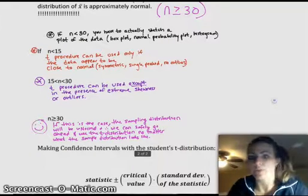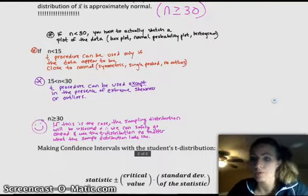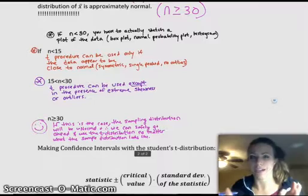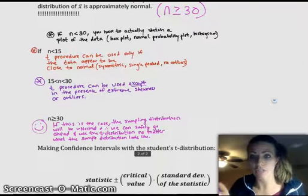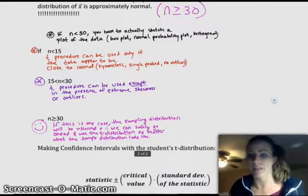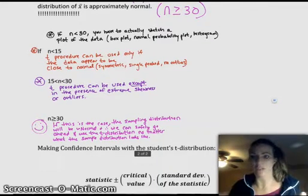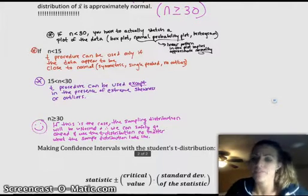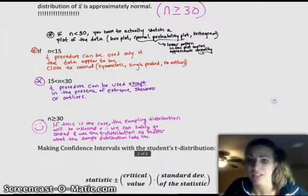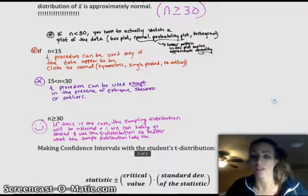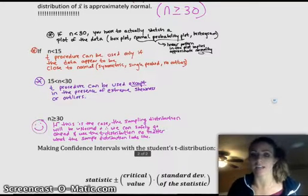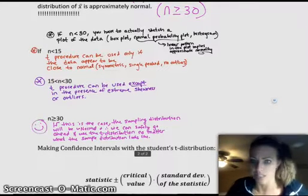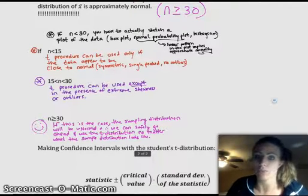And just as a refresher, the normal probability plot, that's the one where you're plotting the points versus what their z-score would be if the data were normal. And so you're looking for a linear trend on a normal probability plot. On a box plot or histogram, you're just looking for symmetric, no skewness, no outliers. All right, so there's the chunk of the t-distribution. Making confidence intervals with them is super easy. You are still estimating mu. This is still quantitative data. And so your statistic is x bar. Your critical value, that comes from the t-distribution instead of the z-distribution. And that's the only thing that's super different. So I'll show you how to do that.